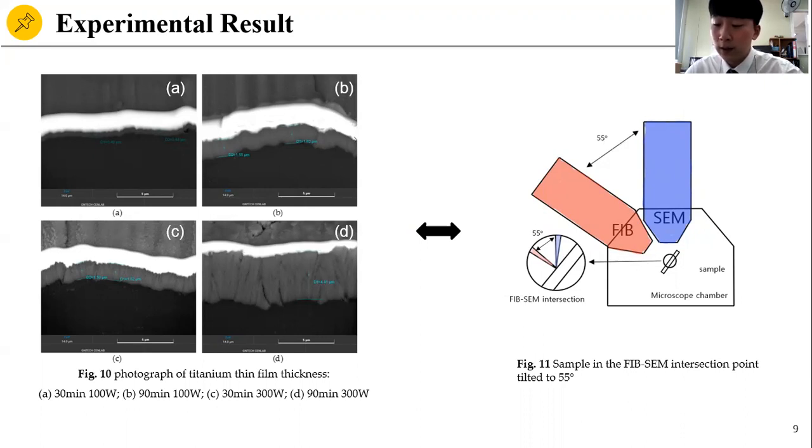Figure 11 shows a situation when the sample is perpendicular to FIB. A platinum coating was applied locally to the specimen surface to prevent damage to the titanium thin film layer surface during FIB processing. After FIB processing, the titanium thin film cross-section was observed by tilting it at an angle of 55 degrees.